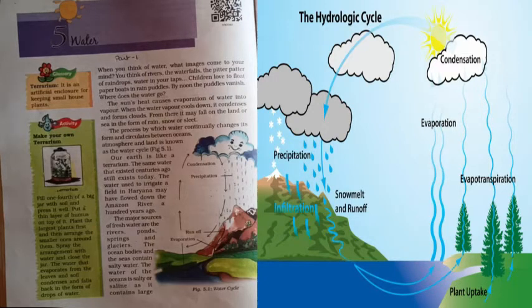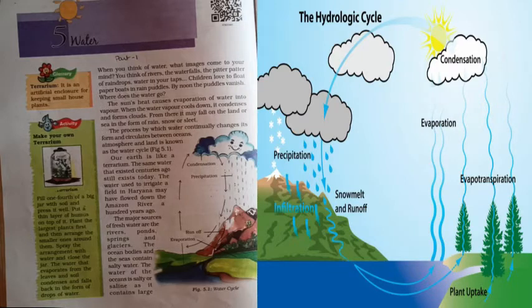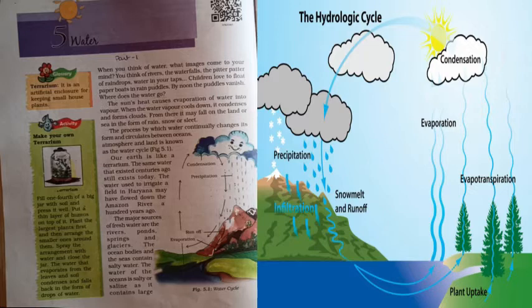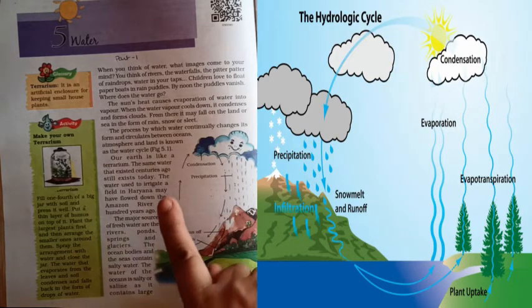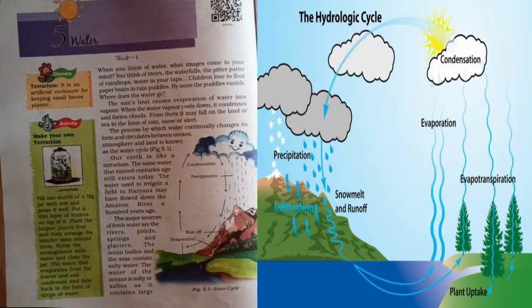During this process, many water droplets or ice crystals join together to form bigger droplets. When the air is not capable of holding them, they fall down on the earth in the form of precipitation. All three processes — evaporation, condensation, and precipitation — are shown in this diagram. Now let us see which are the major sources of water.